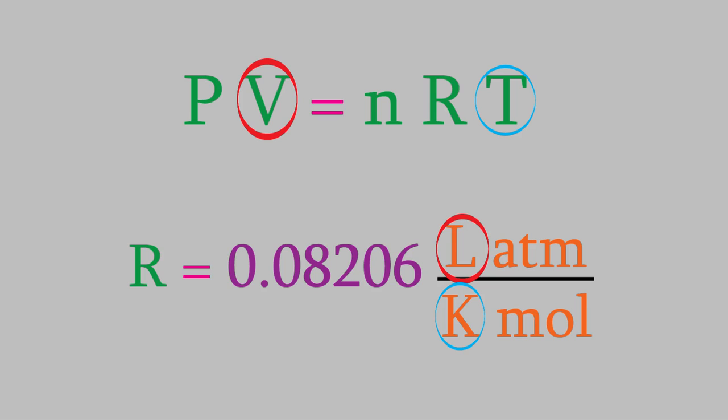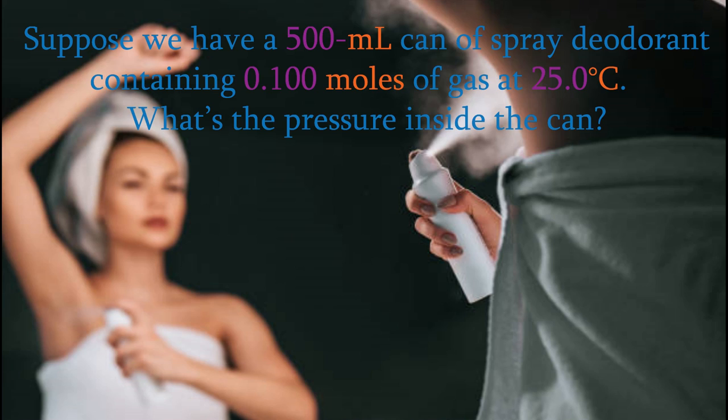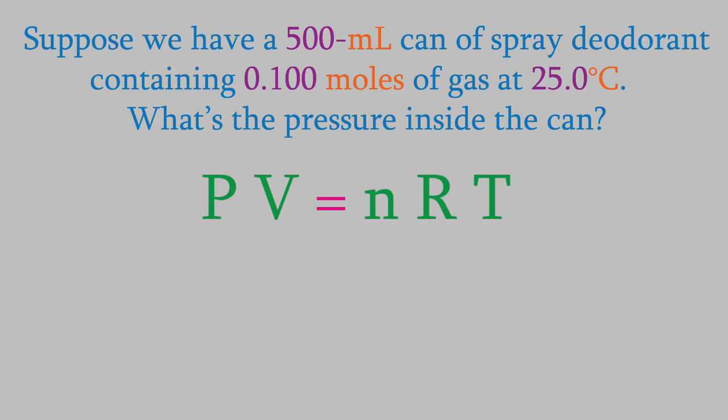So what can we do with this? Let's try an example. Suppose we have a 500 milliliter can of spray deodorant containing 0.100 moles of gas at 25.0 degrees Celsius. What's the pressure inside the can? We'll use the ideal gas law to figure out the answer. We're trying to determine the pressure, P, so we'll just plug the other data into the equation.